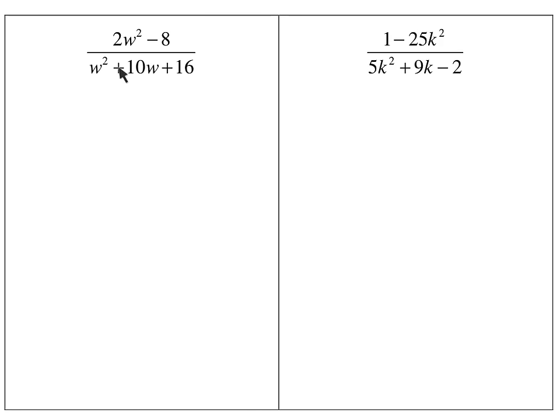In order to simplify this, we need to factor the top and factor the bottom. So when we look at the top, the first thing you'll always look for in factoring is GCFs — a greatest common factor. So when I look at this, I notice there is one. What I'm going to do here for the top is pull out a GCF of 2.